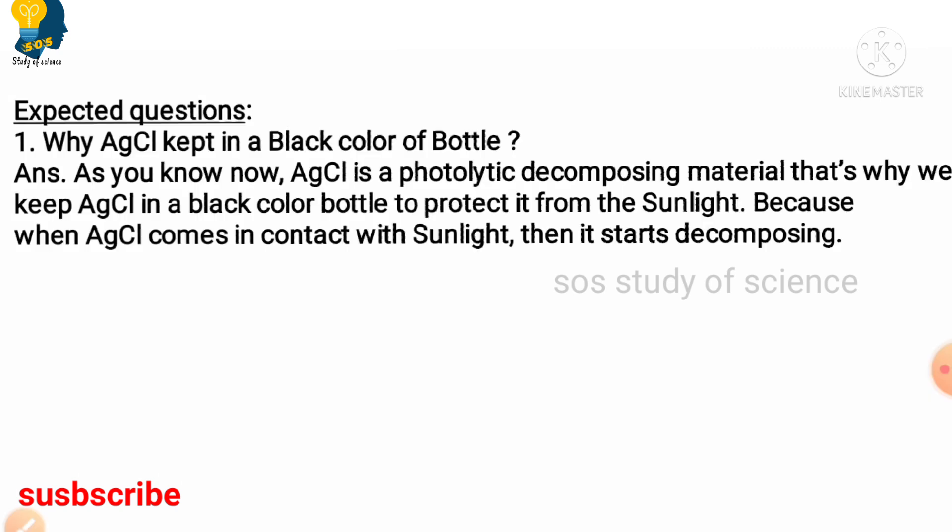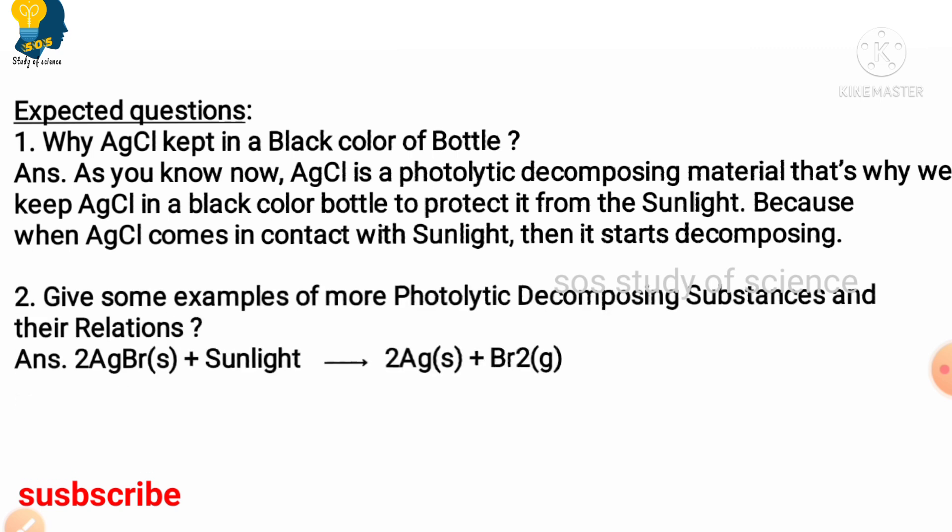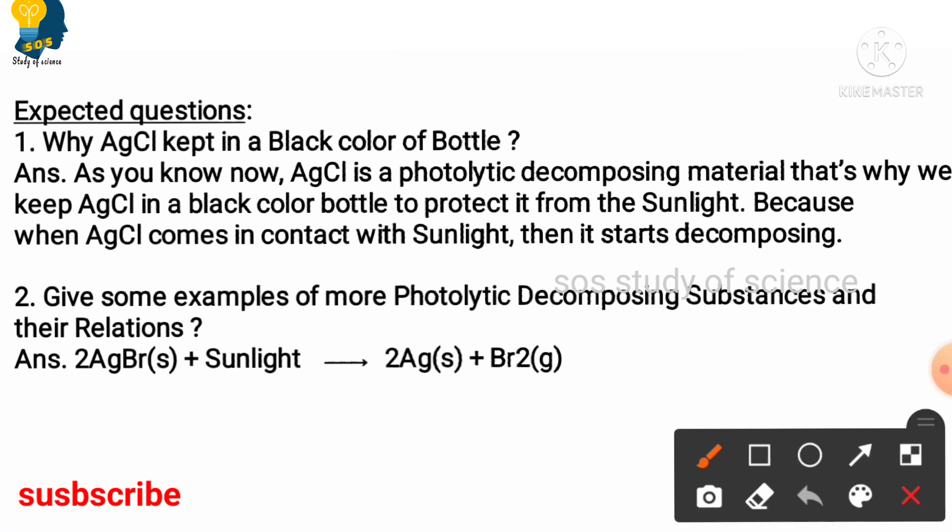Moving to the second question, give some examples for photolytic decomposing substances and their relations. As we all have understood about silver chloride just now, the other example which is given in your textbook is silver bromide. This silver bromide, when it is kept under the sunlight, it will decompose to form silver and also the bromine. Both silver chloride and silver bromide undergo decomposition reaction in the presence of sunlight.